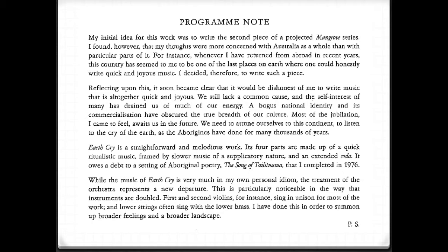It owes a debt to the setting of the Aboriginal poetry, the Songs of Talatama, that he completed in 1976. While the music of Earthcry is very much in his own personal idiom, the treatment of the orchestra represents a new departure. This is particularly noticeable in the way that instruments are doubled — first and second violins, for instance, sing in unison for most of the work, and the lower strings often sing with the lower brass. He has done this in order to summon up broader feelings and a broader landscape. This program note can give us the context, or the contextual issues behind the piece, which we will explore later.